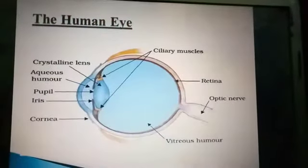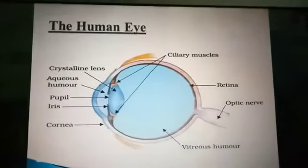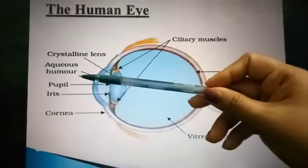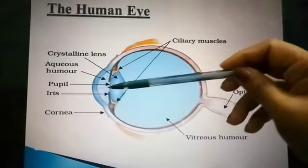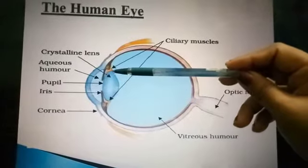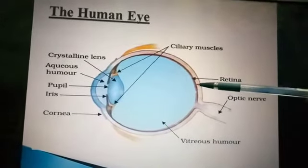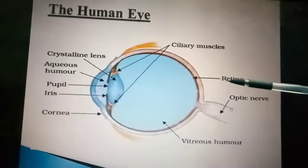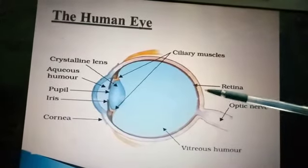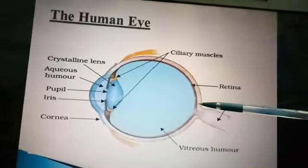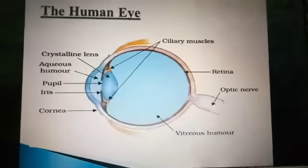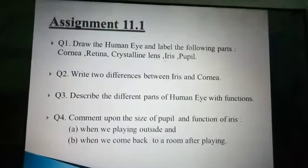To summarize how vision works: if there is any object outside, light from that object enters our eye through the cornea, then through the pupil region, then through the lens. The function of the lens is to converge light rays, so all light rays are converged on the retina. In the retina, rods and cones are light-sensitive cells that get activated. After activation, signals are generated and sent through optic nerves to the brain, and then we see what we are observing. This covers the outer part, middle part, and inner part of the eye.